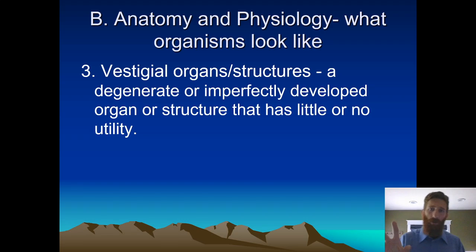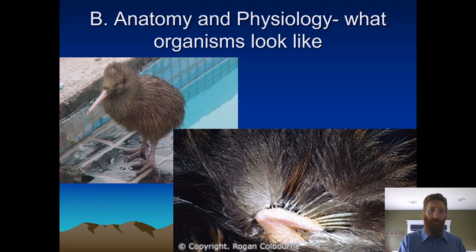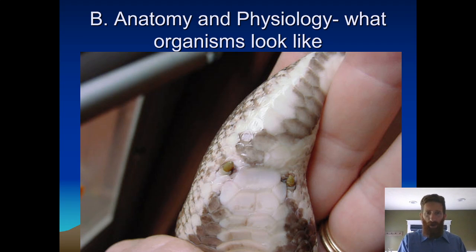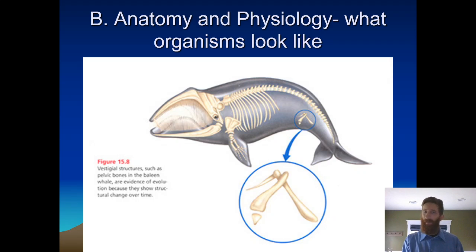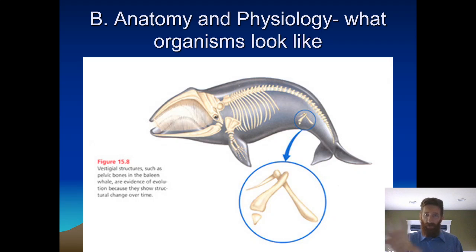Vestigial organs are structures — a degenerate, imperfectly developed organ or structure that has little or no utility. The flightless cormorant wings — why are they there? They're leftovers from evolution. Why would a creator make something that's useless? Kiwi wing — same thing. Snakes, birds — why would a creator make something that's useless? Whales have hip bones — I bet you didn't know that. Evolutionary scientists would say that means whales used to have legs, but they suffered mutations. In their environment, the loss of their hind legs was not a bad thing — it was a good thing. Living in the ocean, whales lost their hind legs, it made them more streamlined, it reduced drag. So whales have hip bones kind of encased in all that blubber. They don't do anything. They're vestigial structures — they're evidence for evolution.